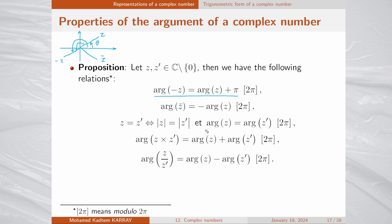Moreover, the argument of the conjugate of z equals minus the argument of z. We can see this since the point corresponding to the conjugate is the symmetric with respect to the abscissa, giving argument -θ. The third property says z equals z prime if and only if their moduli are equal and their arguments are equal.